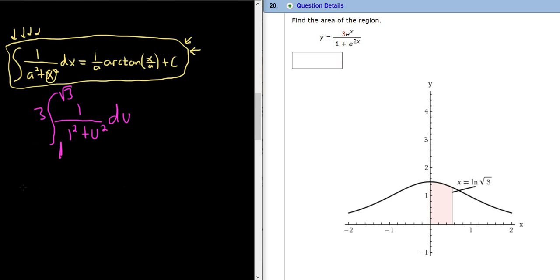Using the formula now. This is equal to 3 times, and it's 1 over a, so a is 1. So 1 over 1. Arctangent of u over 1. And we don't have to add a c, because it's a definite integral. So we're going from 1 to the square root of 3. This is equal to 3 arctangent of u, and we're going from 1 to the square root of 3.